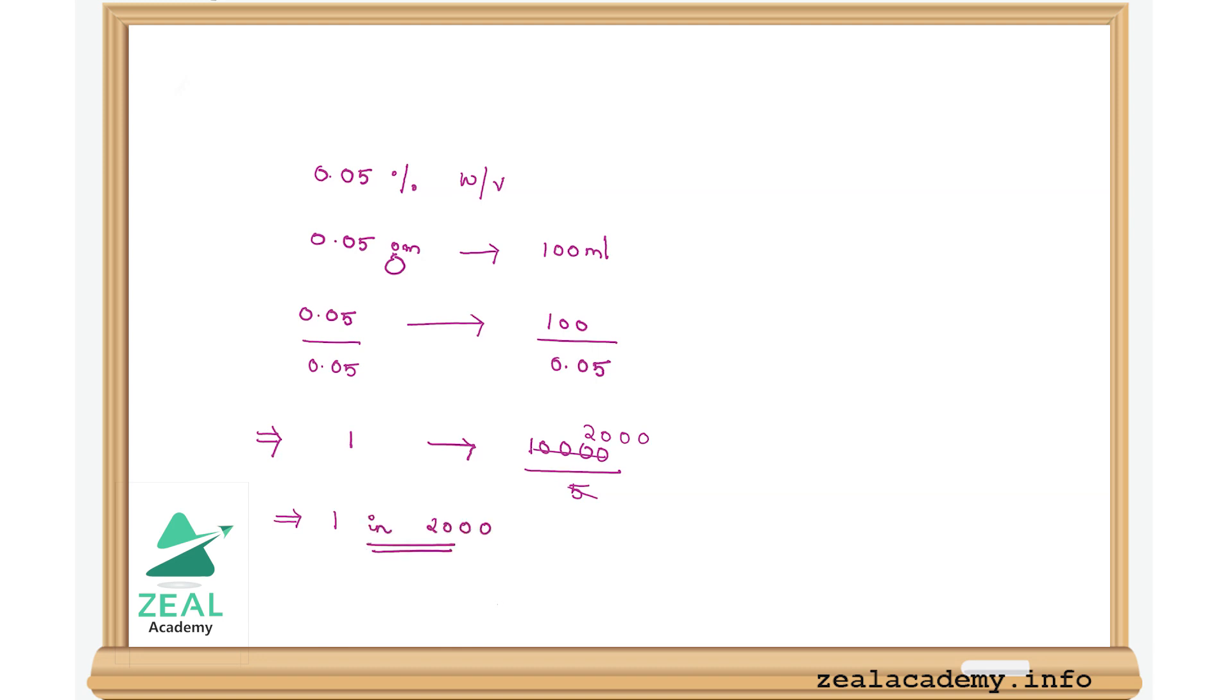Therefore, the answer to the question is 1 part in 2000 parts. That is Option D.